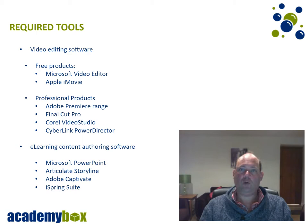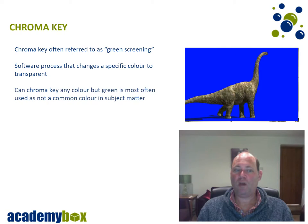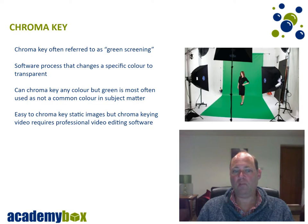Let me explain the chroma key concept. Chroma key is often what we refer to as green screening, and it's a software process that changes a specific color to be transparent. You can actually chroma key any color, but green is the one most often used simply because green is not a common color found in the subject matter we are recording. It is quite easy to chroma key static images, but once you start trying to chroma key moving video you require proper professional software to deal with that.